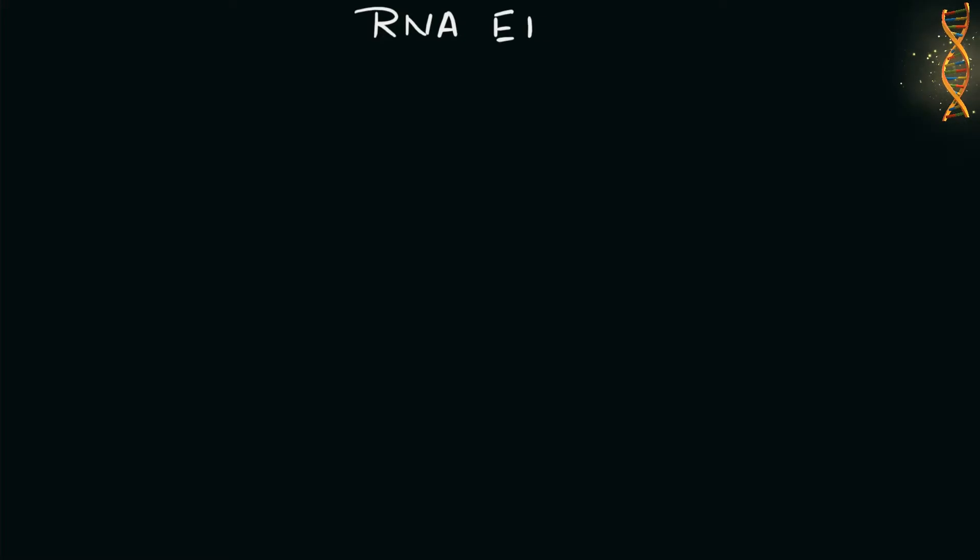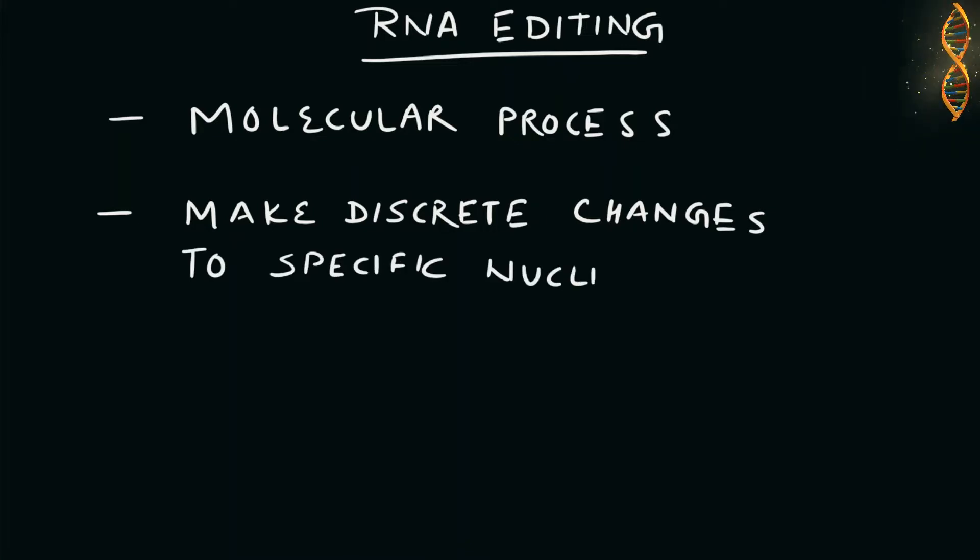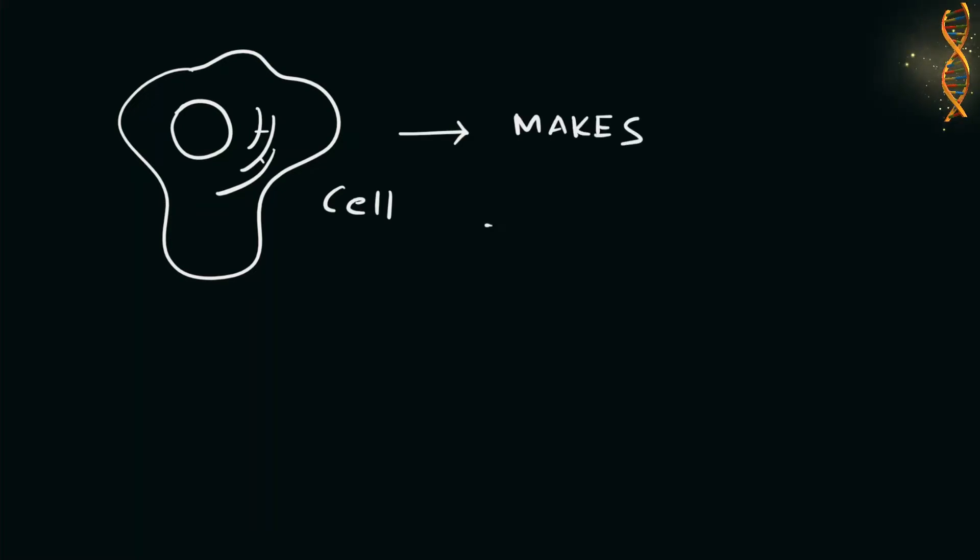Let's start the lecture by understanding what is RNA editing. RNA editing is a molecular process through which some cells can make discrete changes to specific nucleotide sequences within an RNA molecule after it has been generated by RNA polymerase. What it means is, when a cell makes an RNA molecule, its sequence can be changed after it is synthesized to change the final sequence of the protein.